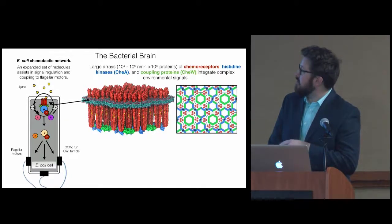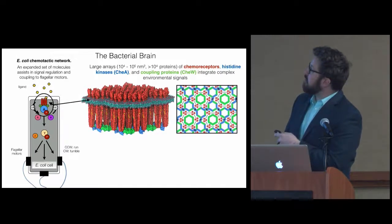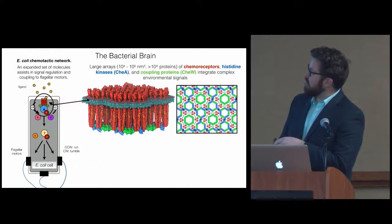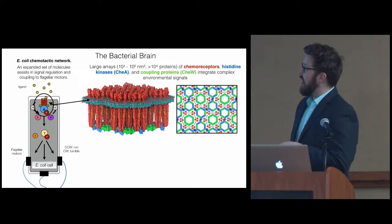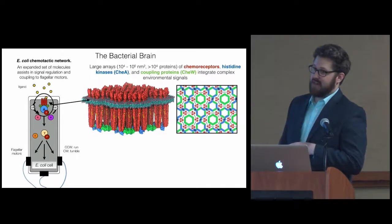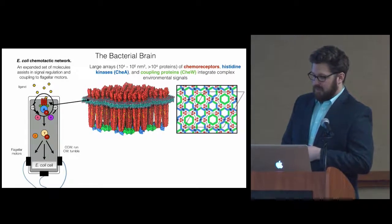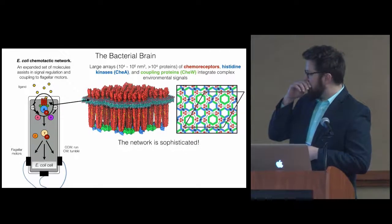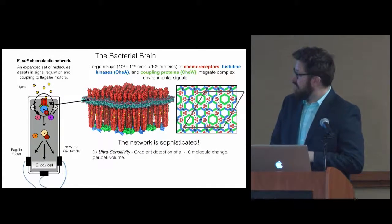What's interesting about these proteins is that although the array is composed of just three types of proteins, a chemoreceptor, a histidine kinase CheA, and a coupling protein CheW, all these proteins come together to form this rather elaborate and highly ordered hexagonal lattice. You actually get the receptors trimerizing to form trimers of dimers, and then you get these rings of kinases and adapter proteins.